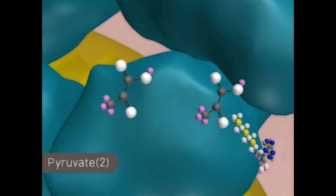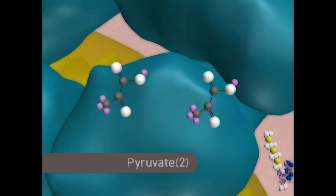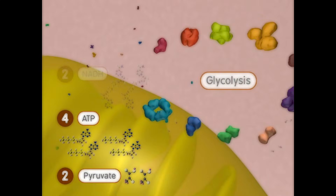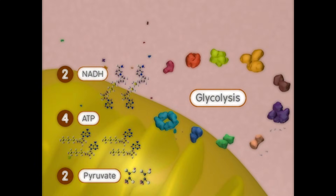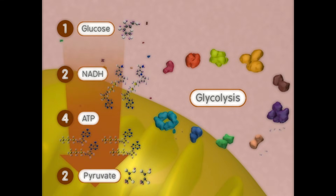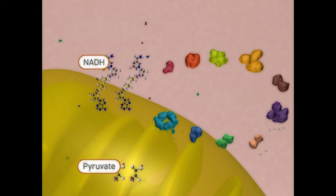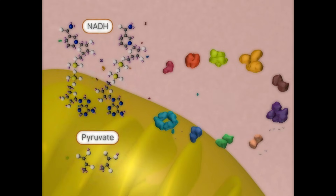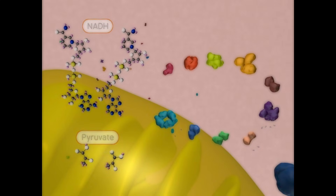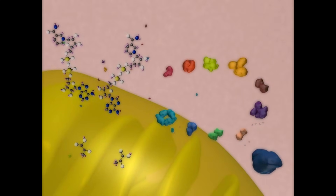At this point, two pyruvate molecules, four ATPs, and two NADHs are formed for each glucose that was broken down in glycolysis. The pyruvates and NADHs could be used in aerobic respiration to produce more energy for the cell.